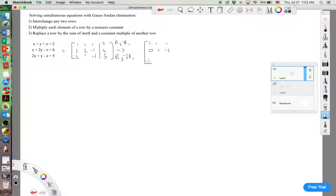And then 2 times r1 subtracted from r3. So we'll get 2 minus 2 is 0, 1 minus 2 is negative 1, and negative 1 minus 2 is negative 3. And then on this side, this stays the same. 6 minus 2 is 4, and 5 minus 4 is 1.